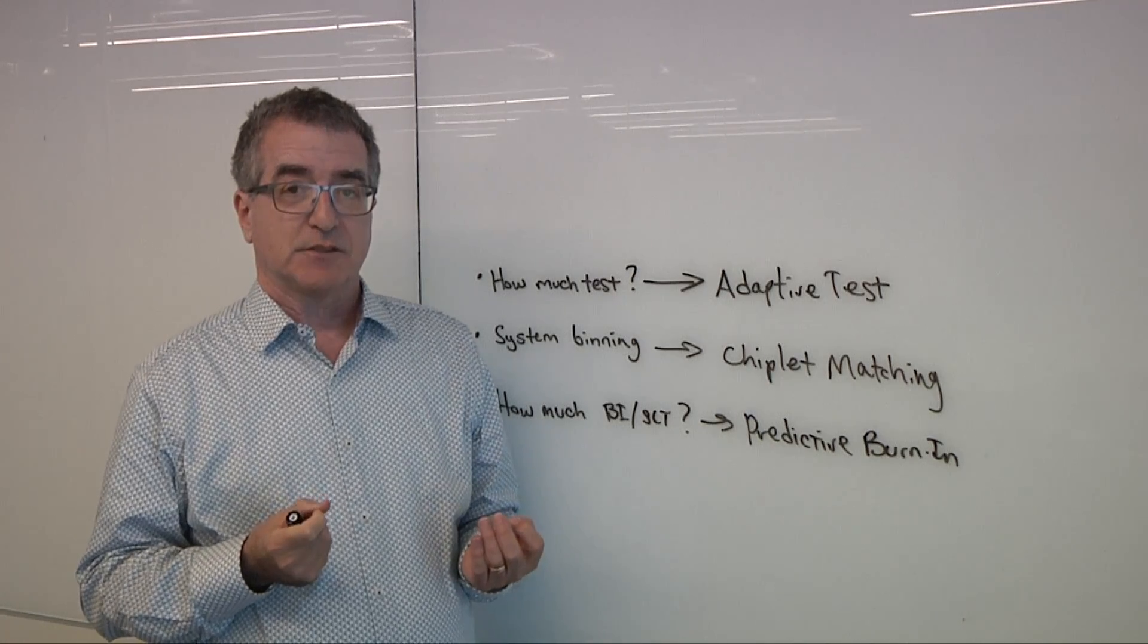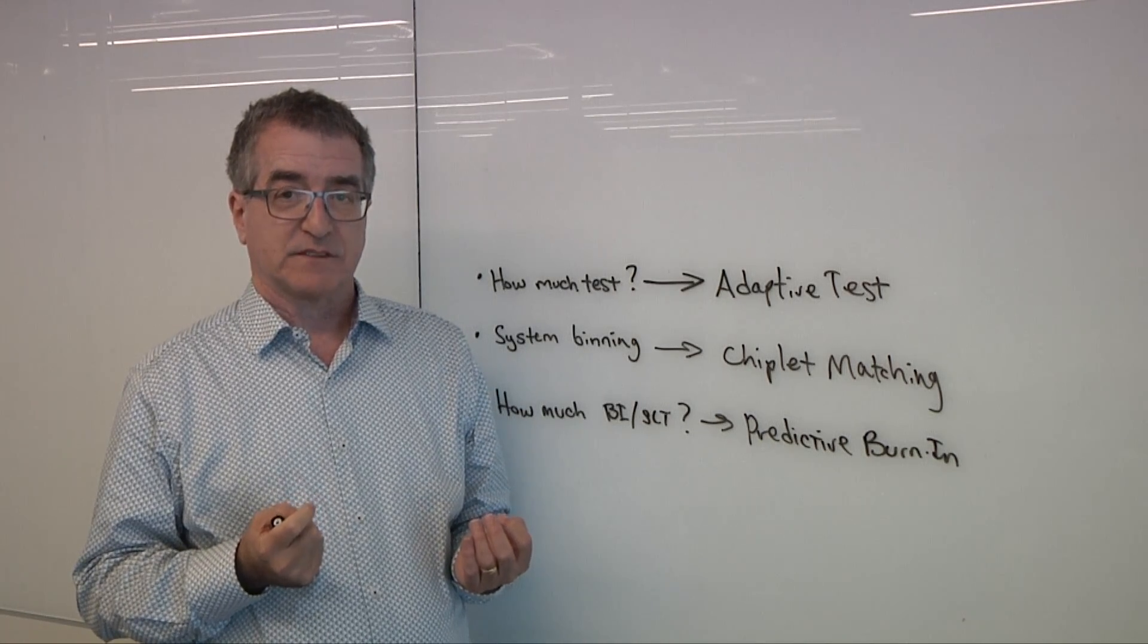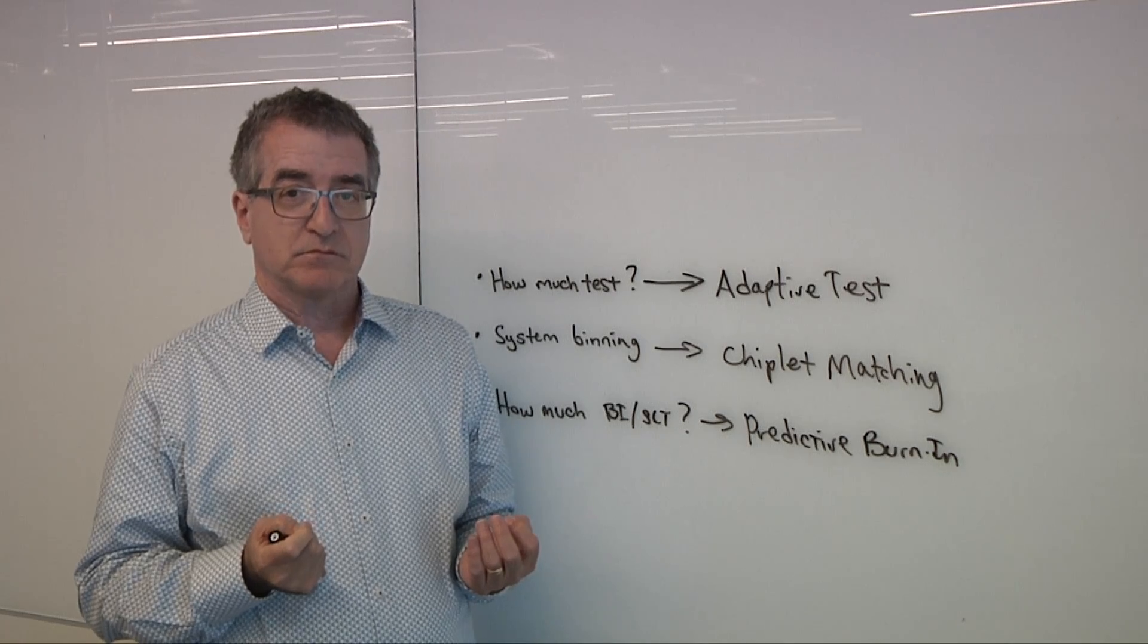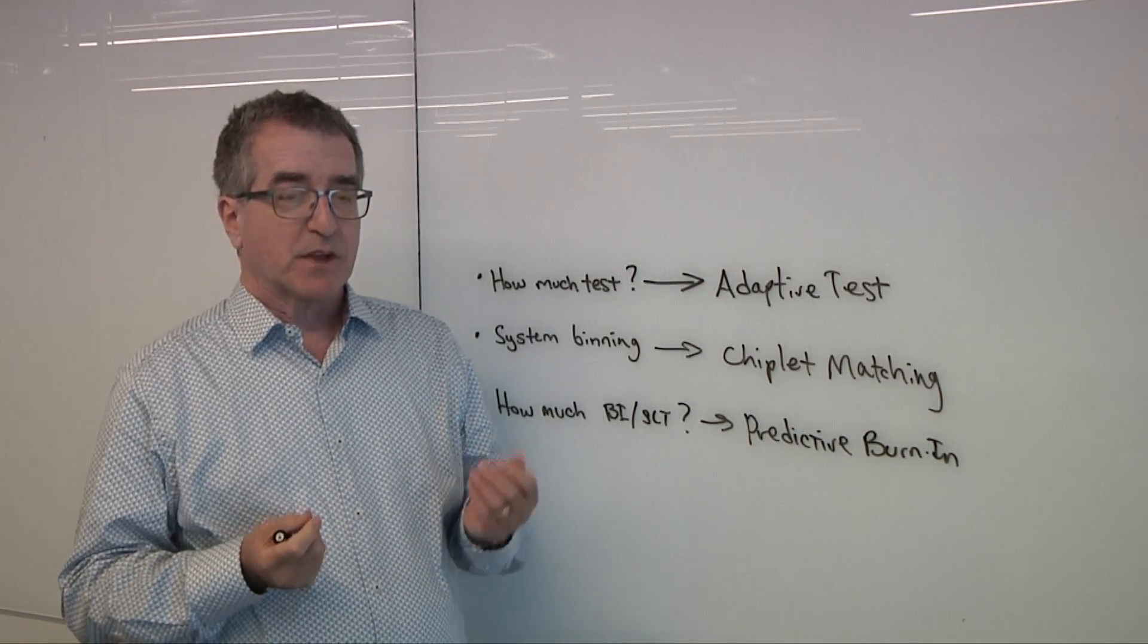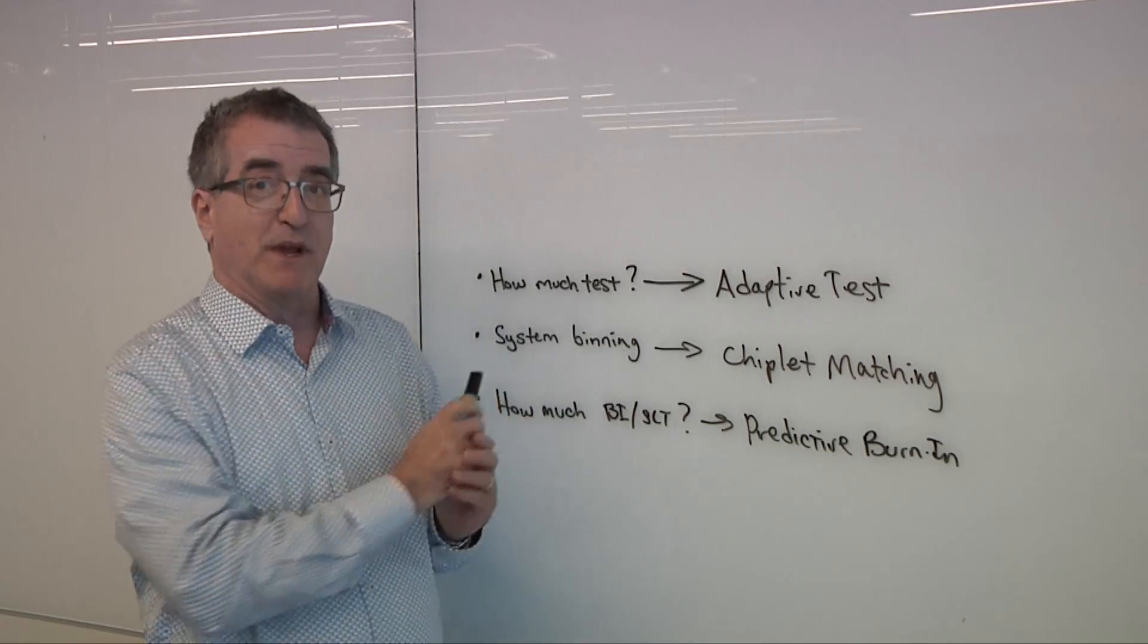When we look at chips, a lot of those were binned on the basis of how well did it perform. If it wasn't quite up to snuff, it still had a use in some applications. What happens with chiplets? How does that change? So with chiplets, and this is what we mean by system binning, the problem is that you have multiple chiplets, multiple die, into one finished product.